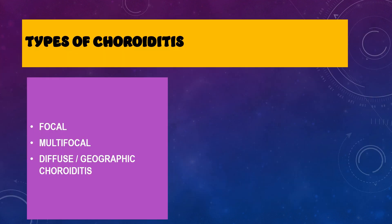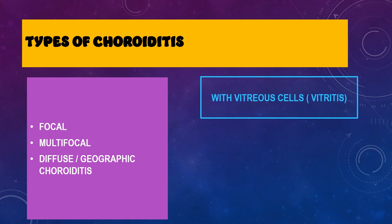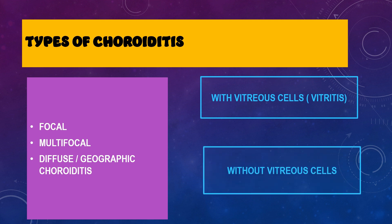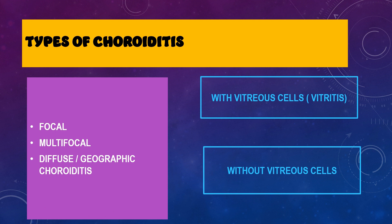Choroiditis can also be divided into focal, multifocal, or diffuse/geographical types, and further classified by the presence or absence of vitreous cells. Choroiditis is a very vast topic and therefore white dot syndromes will be discussed in the next video, followed by the differential diagnosis of different types of choroiditis. That's all for today — thank you and have a nice day.